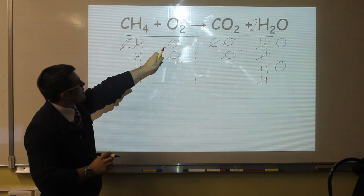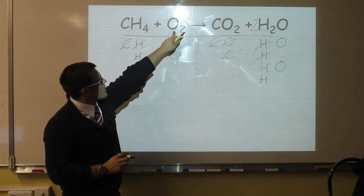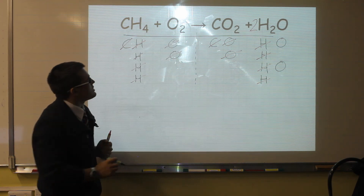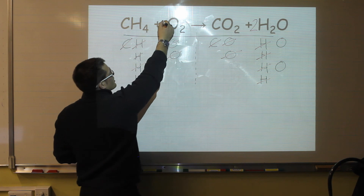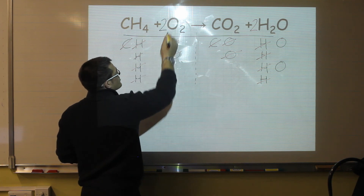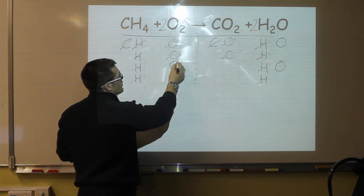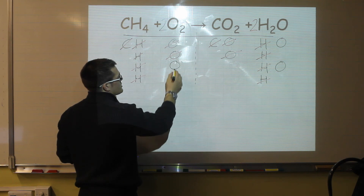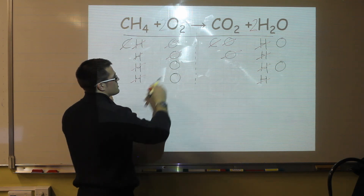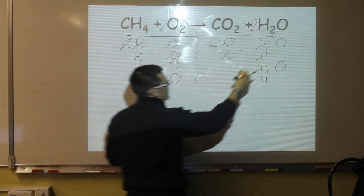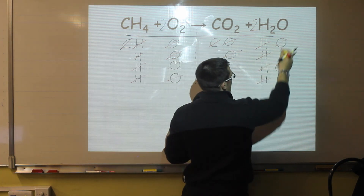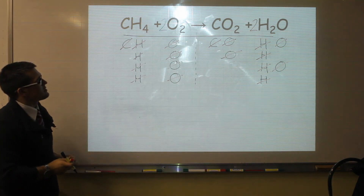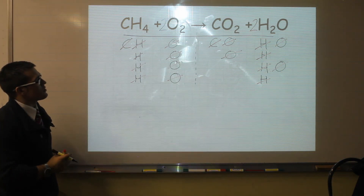I've still got one problem: I still have two additional oxygen atoms on the right-hand side of the equation. So on the left side, I look for where I've got oxygen. The only place I have it is in my oxygen molecules, and I only need two more. So I put a two in front of that, which gives me my two additional oxygens, and then I can cross them off. Because now everything is crossed off, I know I've balanced the equation for combustion.